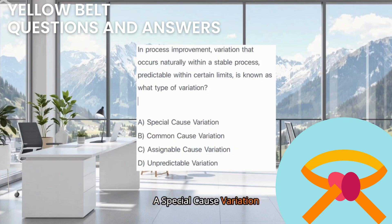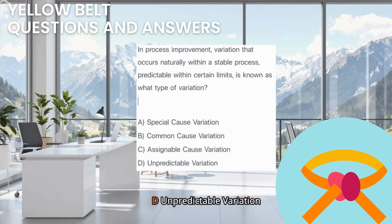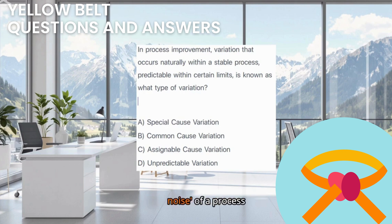A. Special Cause Variation. B. Common Cause Variation. C. Assignable Cause Variation. D. Unpredictable Variation. Think about the background noise of a process.